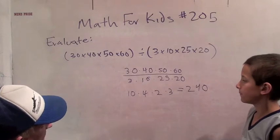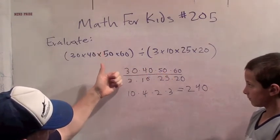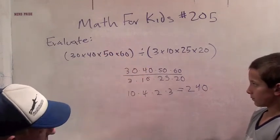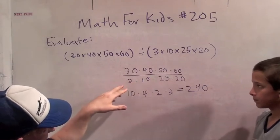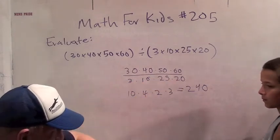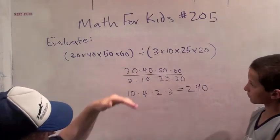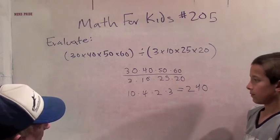Yeah. Now, because these are all multiplications, you can simplify as you go along. If it was all plus, if it was 30 plus 40 plus 50 plus 60 divided by 3 plus 10 plus 25 plus 20, could you simplify? No. You would have to add together before you simplified. Okay? Yeah. Here you can simplify though.